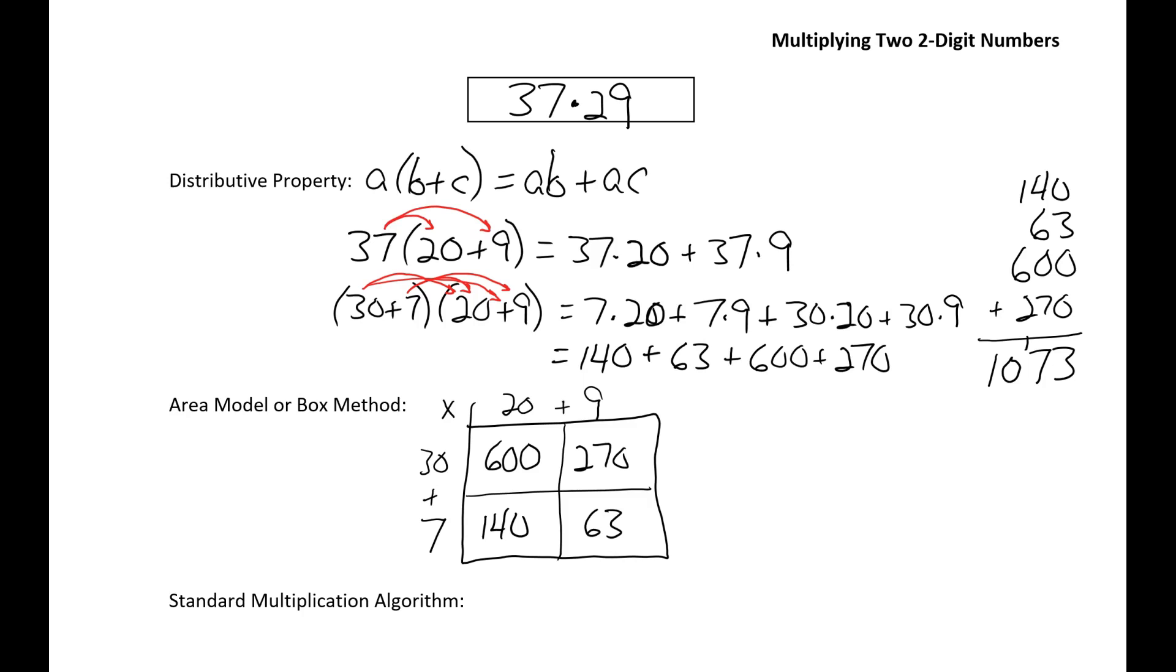And so this method is called the area model, or sometimes the box method of multiplication. And again, this is just another example of the distributive property.